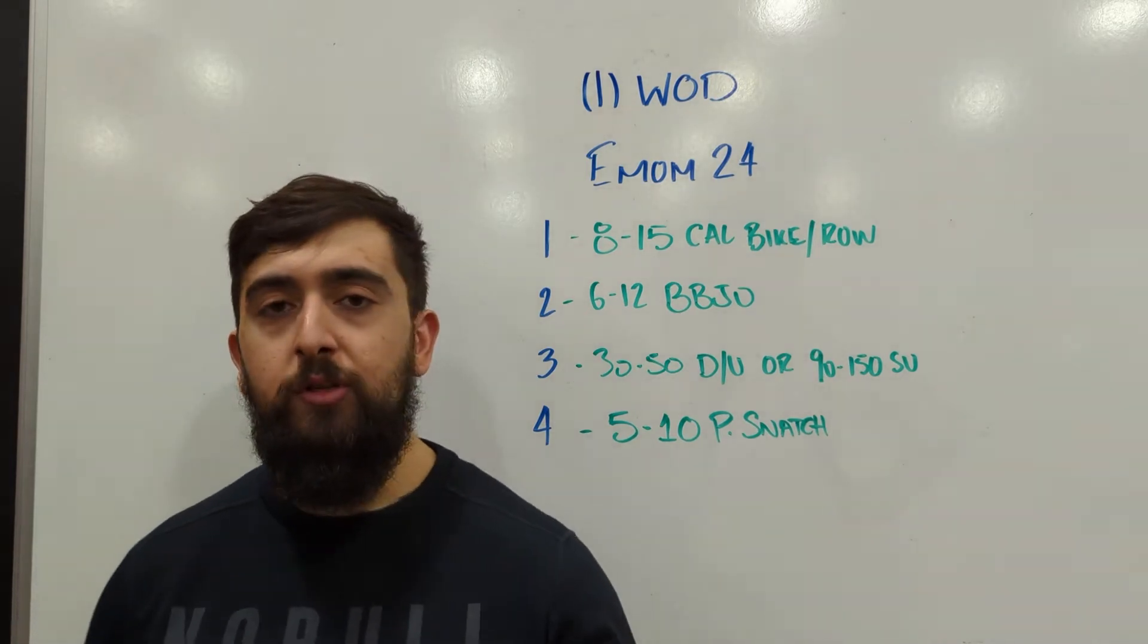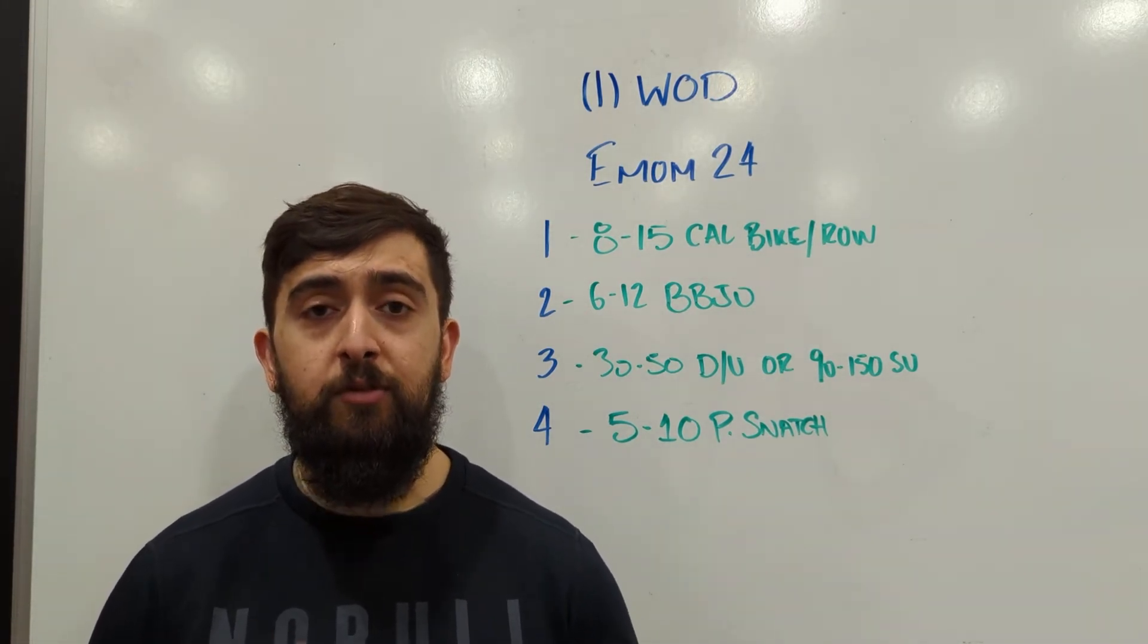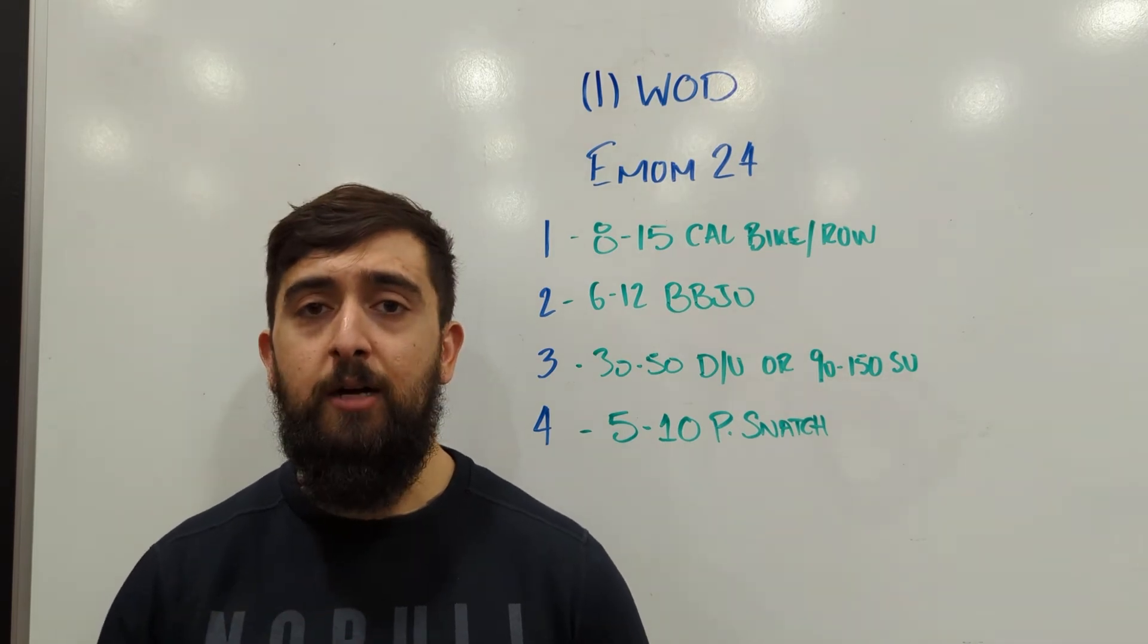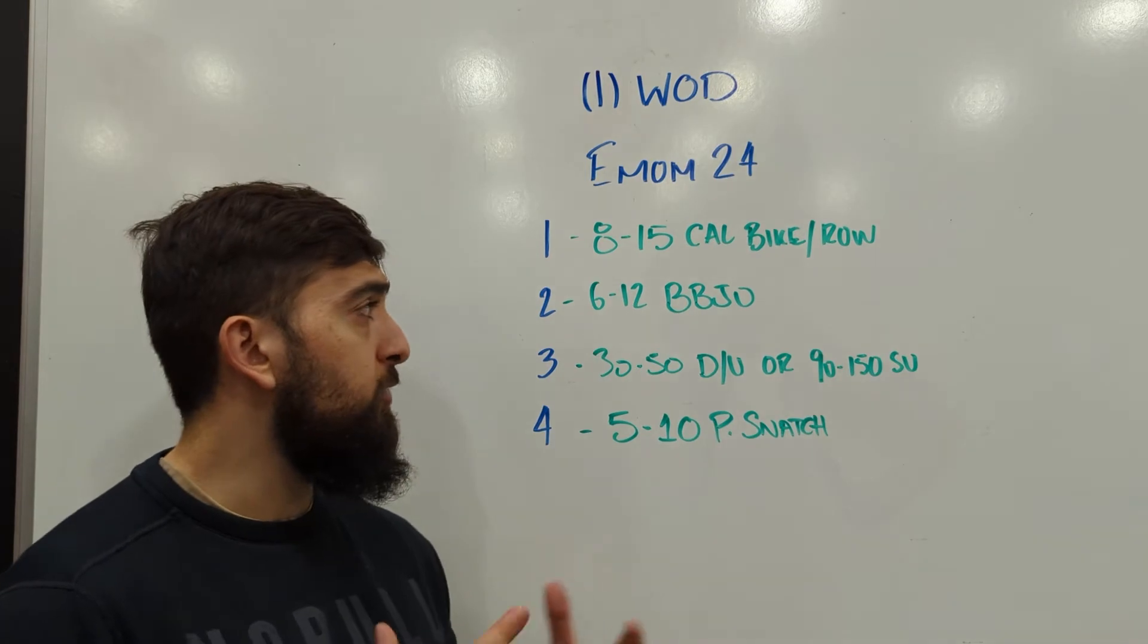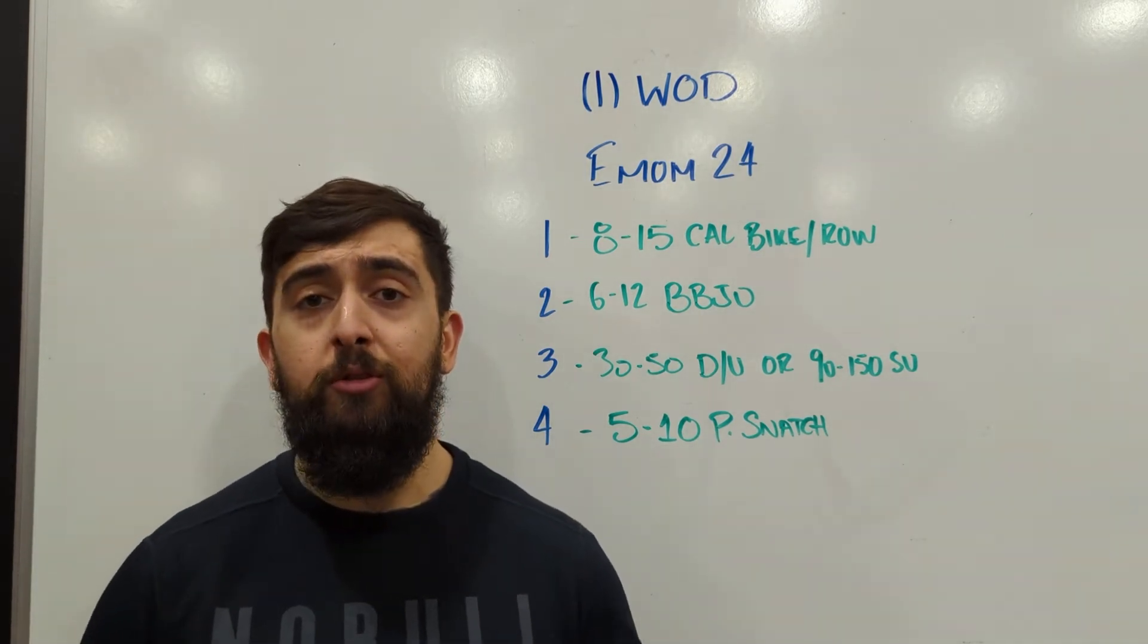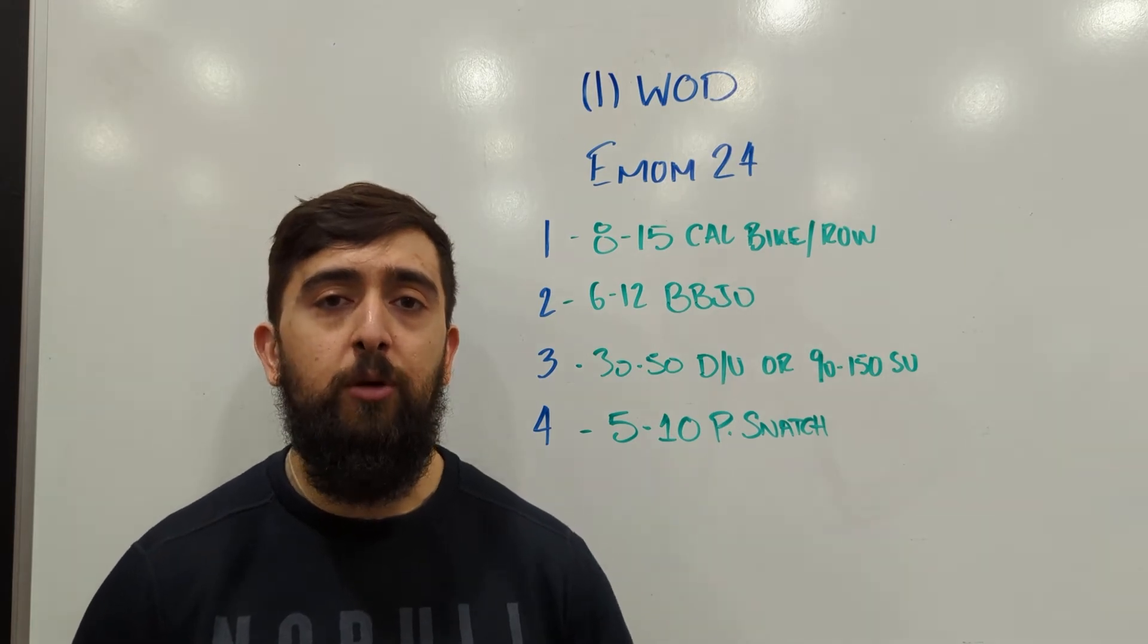Then, second minute, we've got 6 to 12 burpee box jump overs. These are going to be a little taxing, so start off smaller. If you do 6 reps at a time, then if it feels good, maybe get up to that 8 range or 10 range. You've got 6 to 12 reps, and you can choose that rep range based on what you feel and based on your experience with the burpee box jump overs.